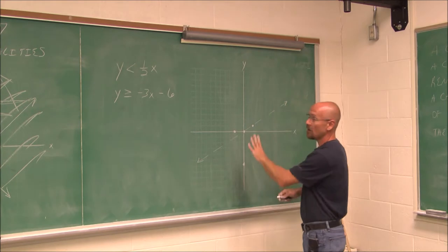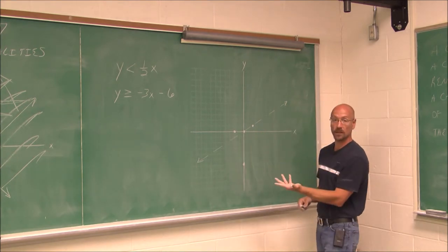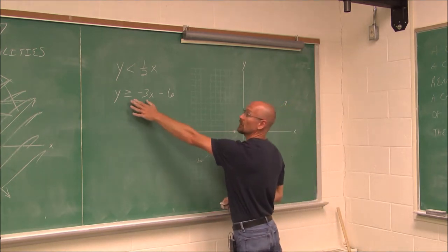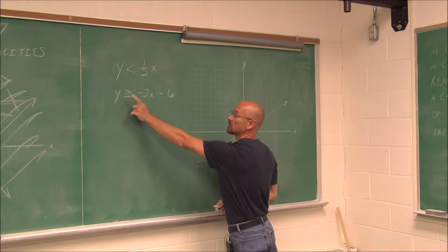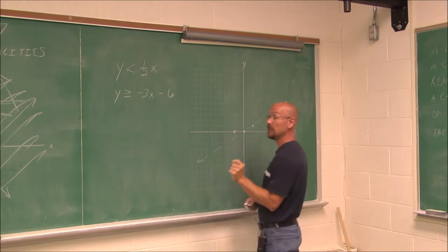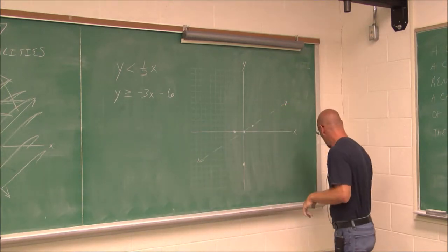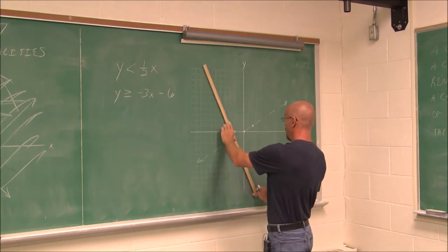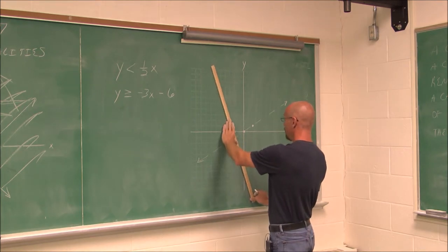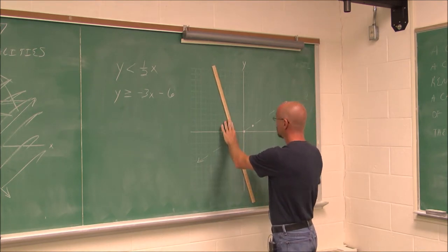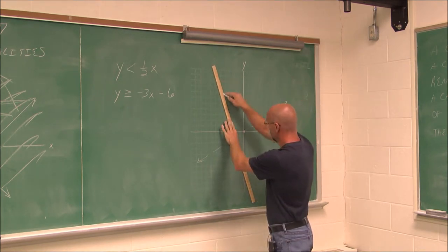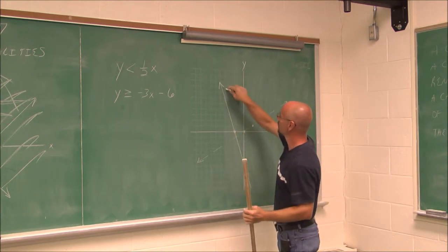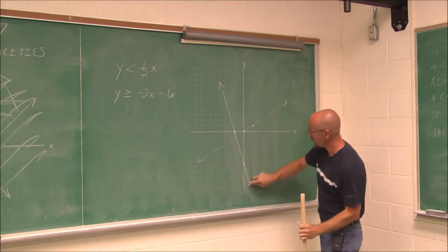Now that I have two points, I'm ready to graph that line. I look at the inequality — it's greater than or equal to, so I'm going to use a solid line. So we have that second linear inequality graphed.